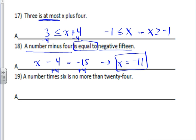And then, 19, a number times six is no more than. Well, is no more than is the same as at most. There's a point when it's at its highest, but it can't be more than that.